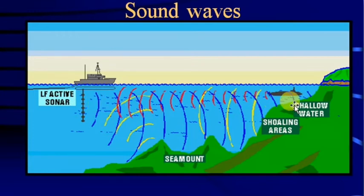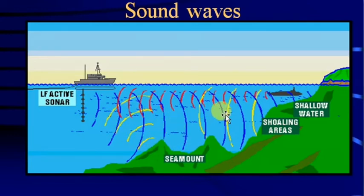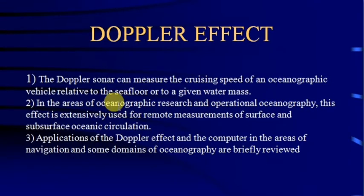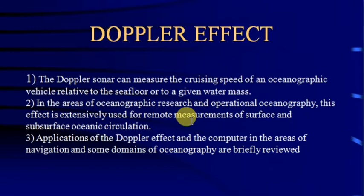Active SONAR is used by ships to transmit sound waves, which are reflected by the topography and by submarines, shown in different colors representing different heights, ranges, and positions. This information is processed inside the SONAR to determine the total topography and object positions. The Doppler effect is a key component — Doppler SONAR can measure the cruising speed of an oceanographic vehicle relative to the seafloor. This effect is extensively used in oceanographic research for remote measurements of surface and subsurface oceanic circulation.